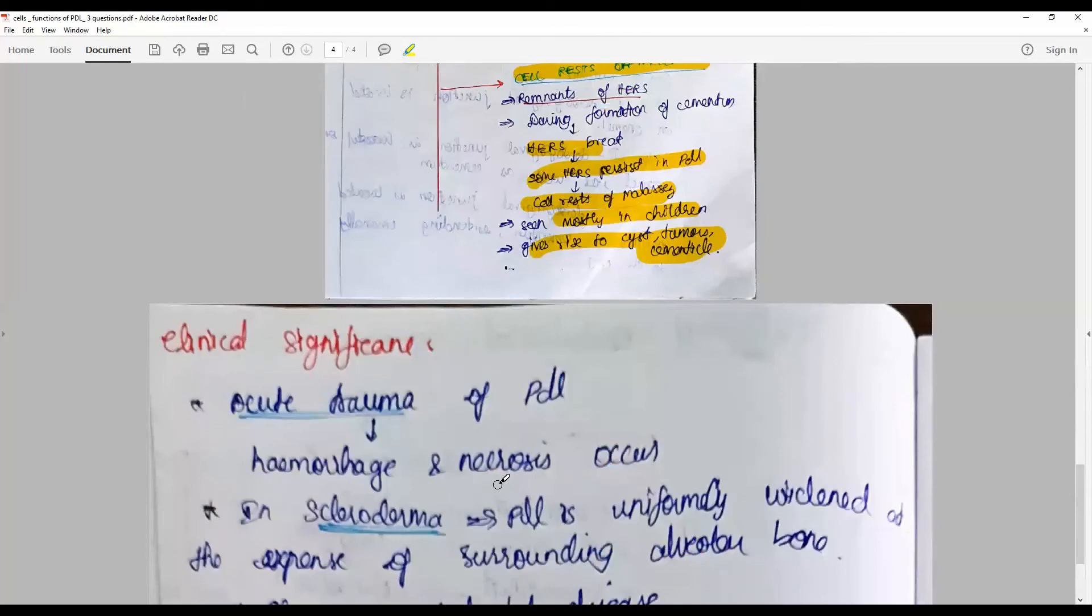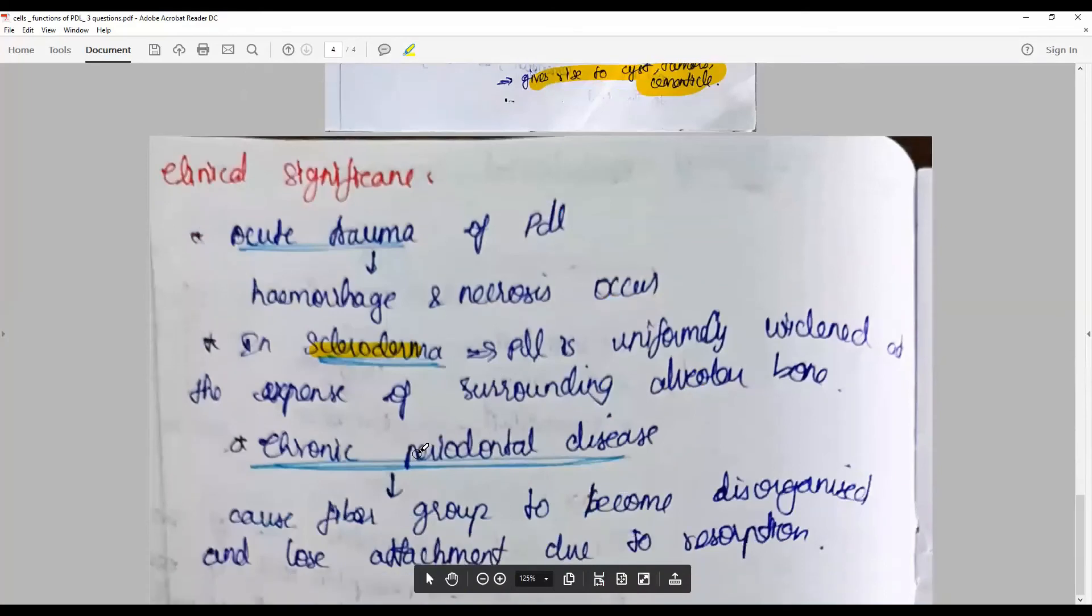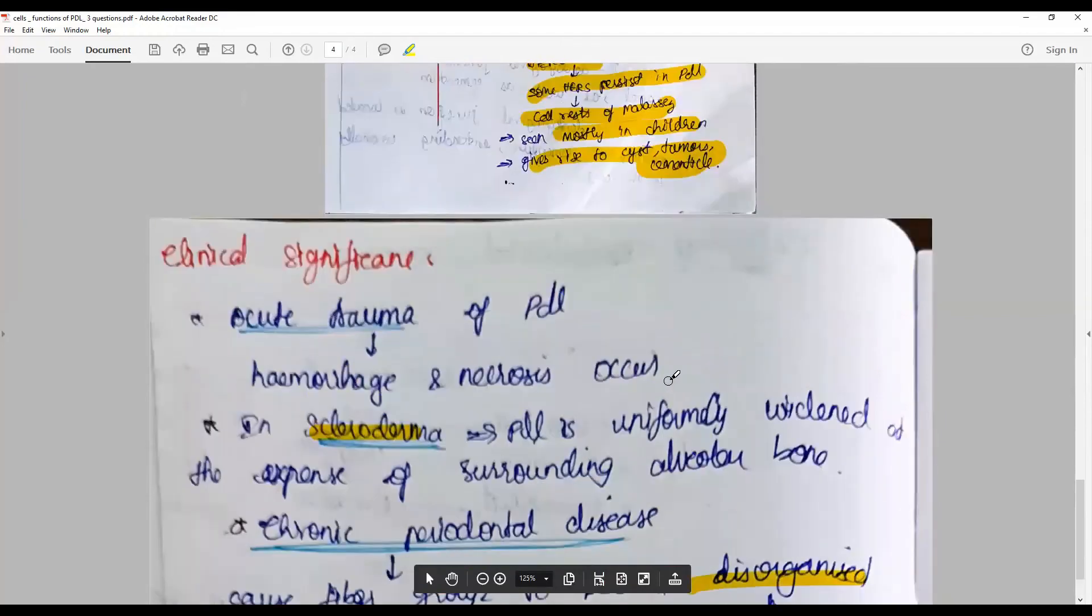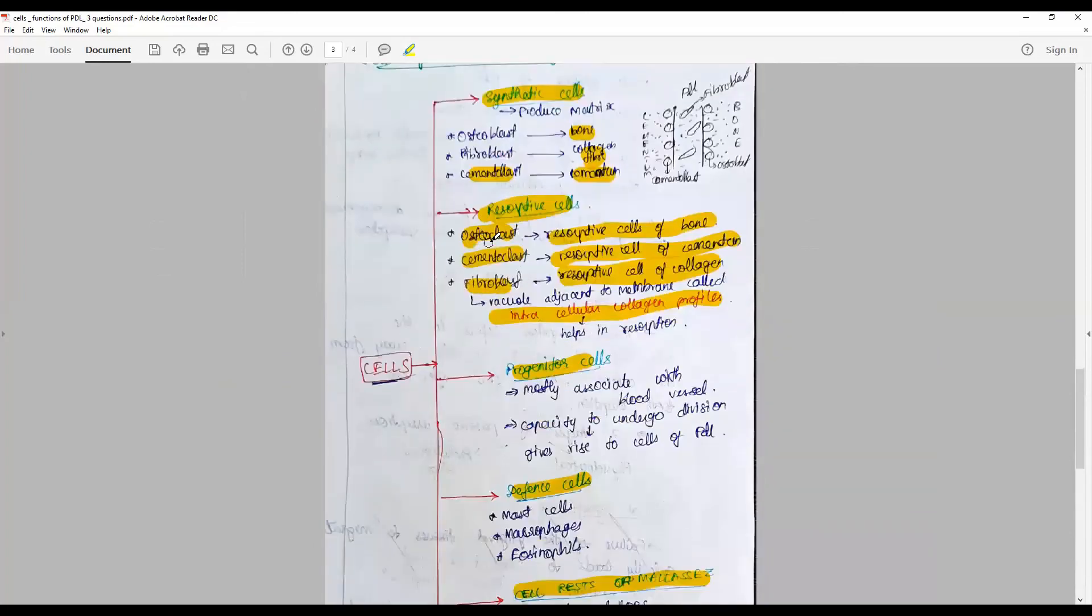In scleroderma, PDL is uniformly widened at the expense of surrounding bone. Chronic periodontal disease causes the fiber groups to become disorganized with loss of attachment due to resorption of bone. So these are the parts of these cells. You can elaborate to two pages by explaining all these factors. So stay connected, keep learning more.